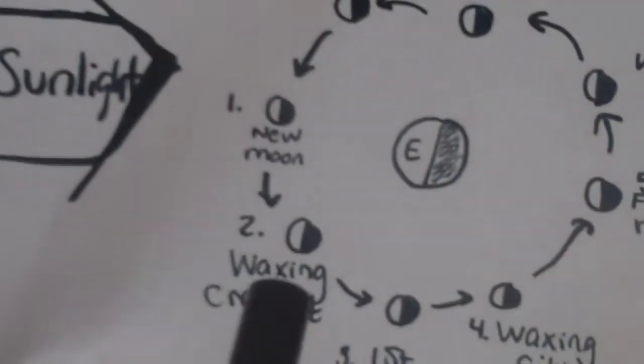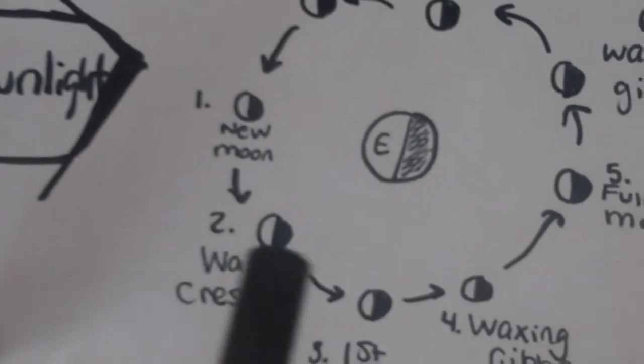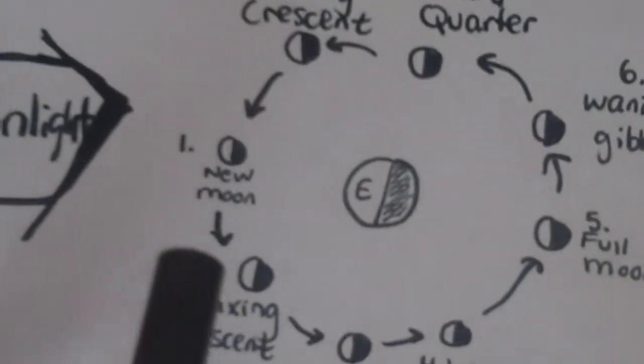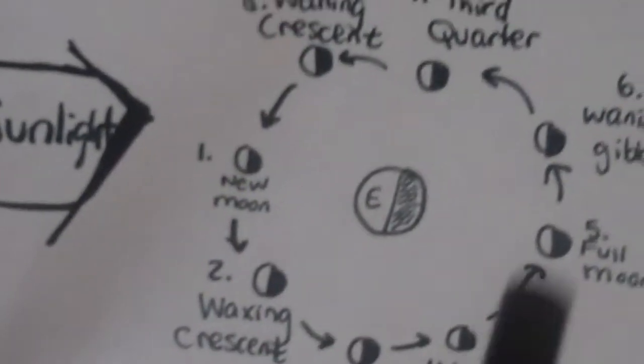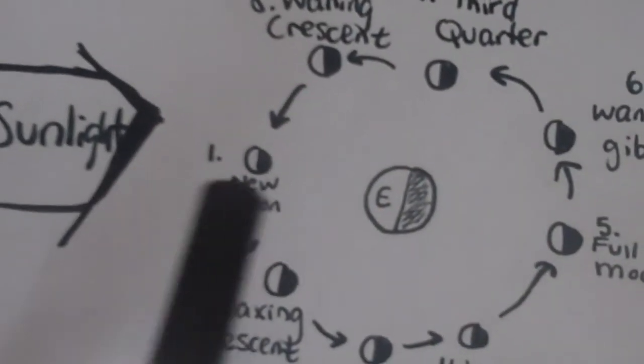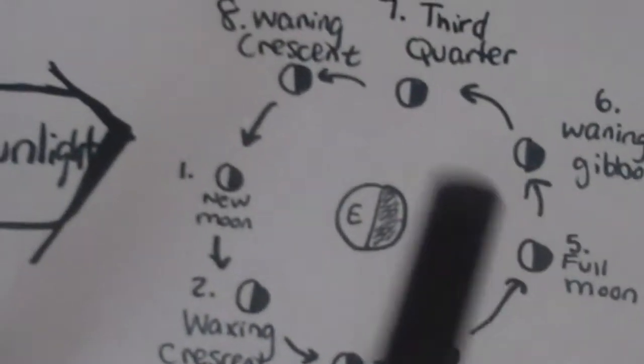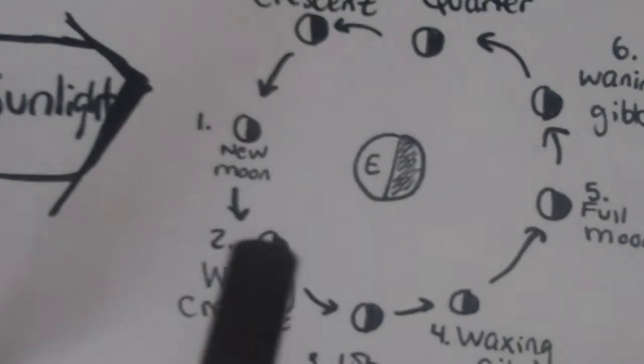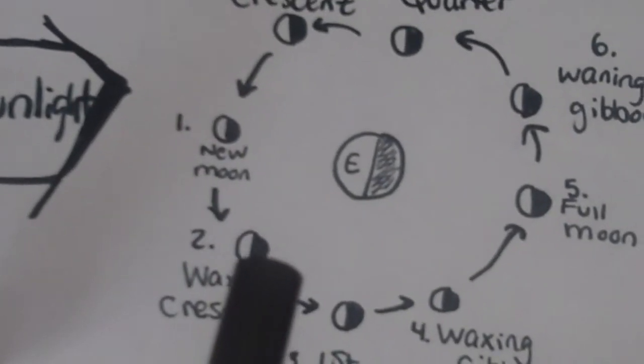As you can see, all of the moons are shaded in on that one side, and it's the same side. So from outer space, this is the perspective of the sunlight shining always on that one side, because we always see the same side of the moon, and the other side will be in darkness.